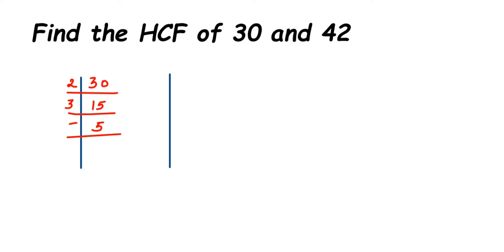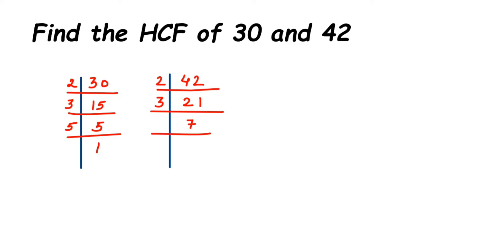Now for 42: 42 is an even number, so start with 2. 2 × 21 = 42. Then 21 doesn't go in 2's table, so take 3: 3 × 7 = 21. Now 7 is a prime number, so 7 × 1 = 7. Those are the prime factors of 42.